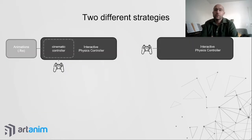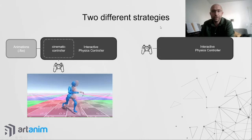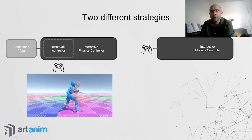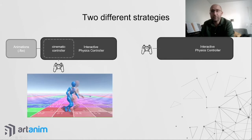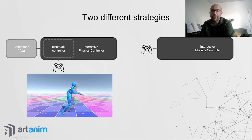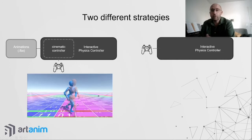Now, to go a bit deeper into how physics-based characters work — there are basically two strategies. The first uses a kinematic controller (the red character) alongside a physics-based character (the blue one), which is physical in the sense that objects will collide with it, it can lose balance and catch up, unlike a kinematic controller which can go through walls and is unaffected by gravity.